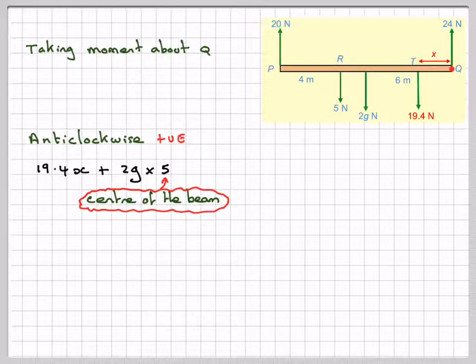That will be 19.4 times X plus 2G times 5, centre of the beam. Because we've got a uniform mass here, I'm assuming that. This is 5 times 6, so this distance is 6 because it was a ratio of 2 to 3. So this is 10, this would have to be 4 and this would have to be 6.